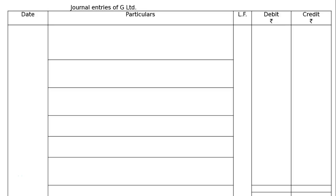The question is: on 31st March 2003, G Limited had Rs. 8,09,000 in debentures due for redemption. The company had a balance of Rs. 1,40,000 in its Debenture Redemption Reserve. We need to pass the necessary journal entries for redemption of debentures.